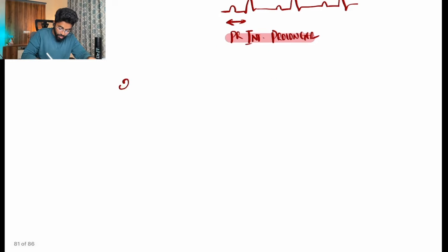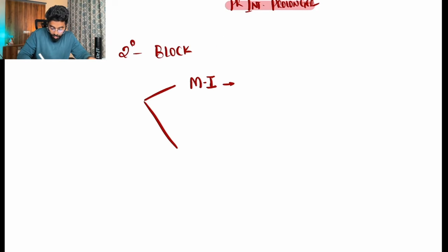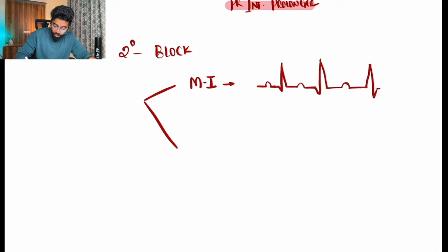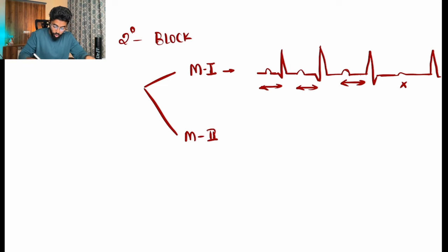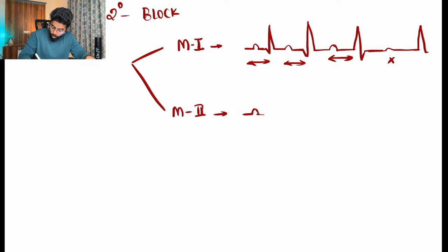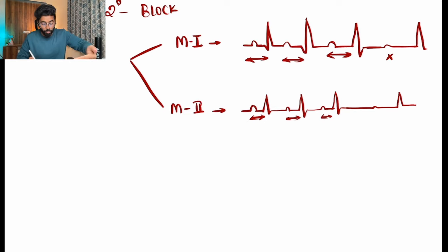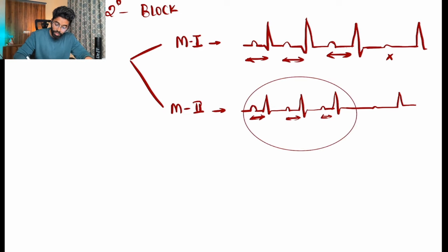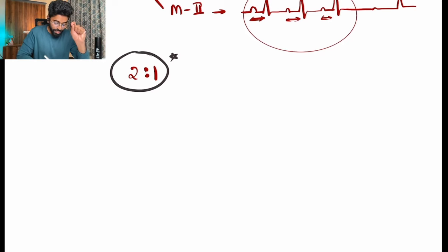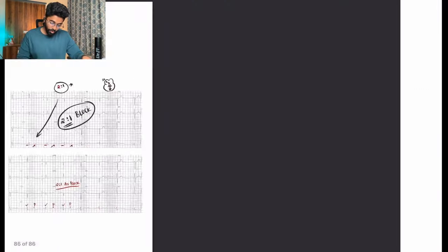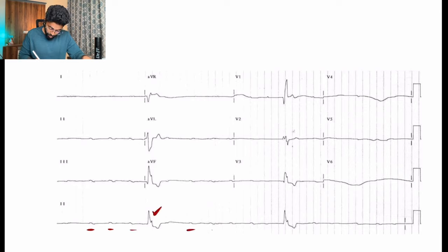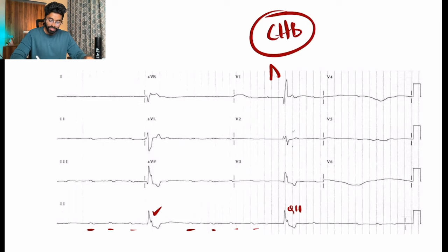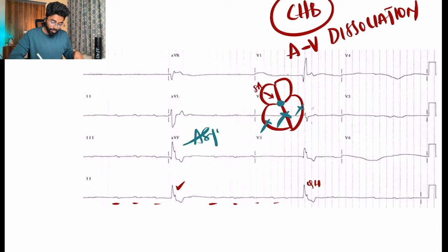In first-degree block, there is a constantly prolonged PR interval. In second-degree Mobitz type 1 (Wenckebach), the PR interval progressively prolongs with every subsequent beat until there is a sudden dropped QRS wave. In Mobitz type 2, the PR interval is either normal or prolonged with a sudden drop of the QRS wave. The distinguishing feature of Mobitz type 2 is a cluster of waves followed by a dropped beat — in 2:1 block, for every second wave, one QRS wave is dropped. In complete heart block, we can see P waves dissociated from QRS complexes — AV dissociation — with a high chance the patient may go into asystole.